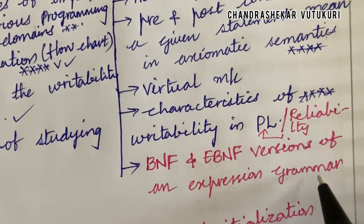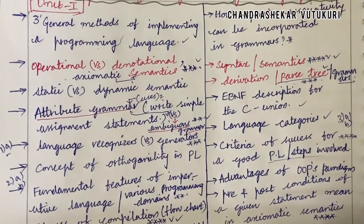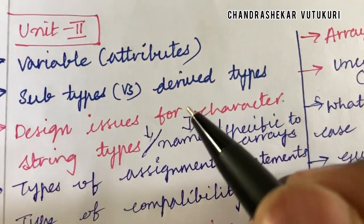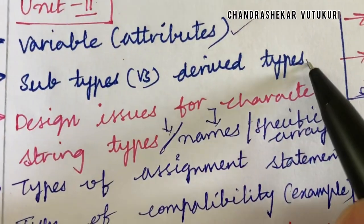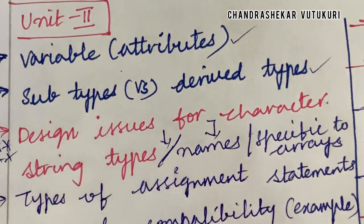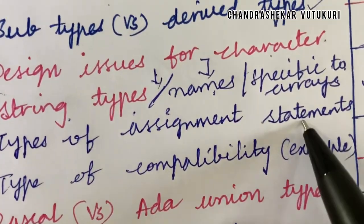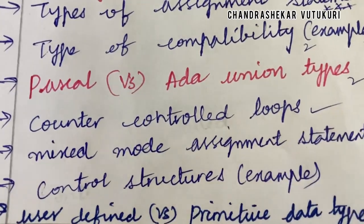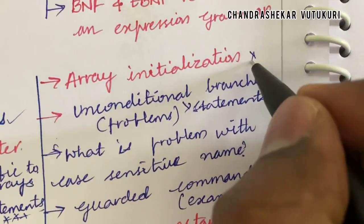BNF and EBNF versions of an expression grammar are also important. Dear students, the PPL course is very lengthy in its structure, so you are supposed to focus on each and every parameter I have highlighted. For the remaining units, I will be enabling questions only for members. Define the term variable and its attributes; subtypes versus derived types and their differences; design issues for character types — these are top questions from Unit 2, either 4A or 4B. Design issues related to character string types, names, or arrays are also important. Types of assignment statements is a gunshot question. Type compatibility is a short question. Pascal versus Ada type compatibility, counter-controlled loops, and mixed-mode assignment statements are short questions. Control structures with examples, and user-defined versus primitive data types, are also important. Array initialization is a top question.